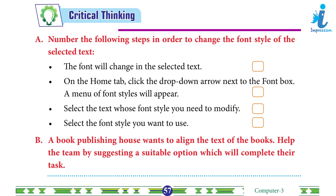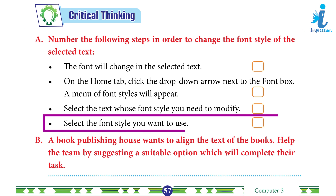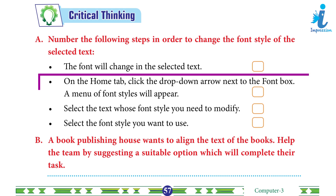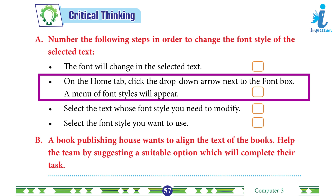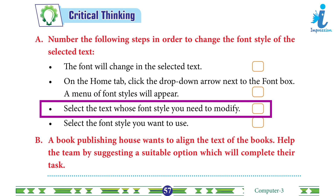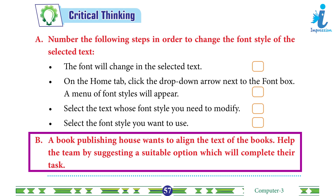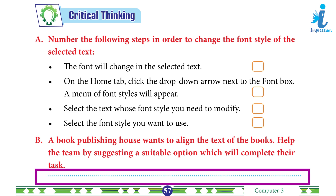Critical Thinking: A. Number the following steps to change font style — Answer: 1. Select the font style you want to use. 2. On the Home tab, click the drop-down arrow next to the font box; a menu of font styles will appear. 3. The font will change in the selected text. 4. Select the text whose font style you need to modify. B. A book publishing house wants to align the text of the books — use Justify alignment to complete their task.